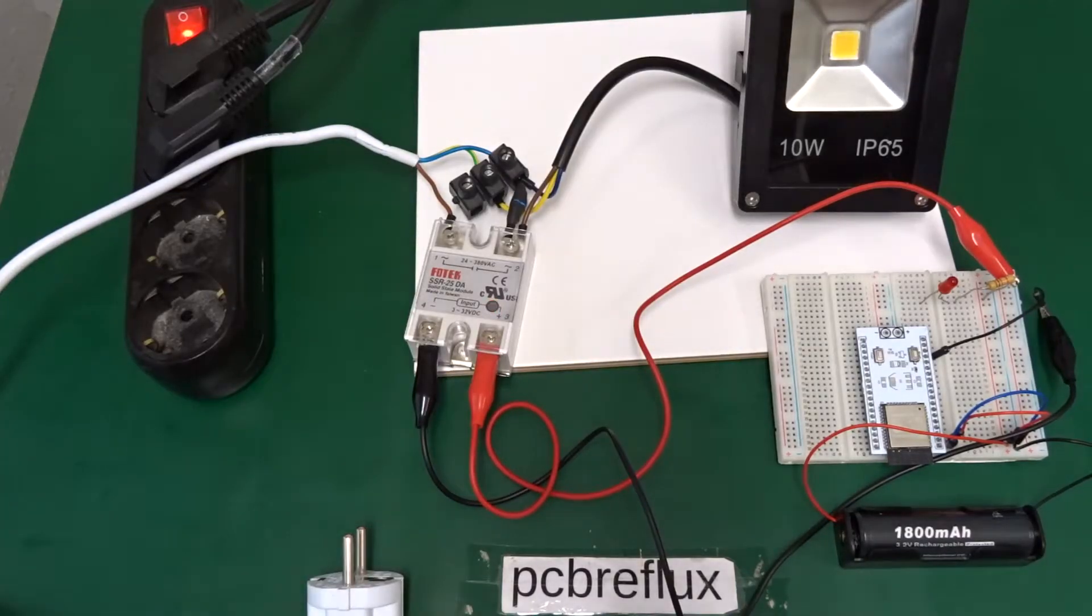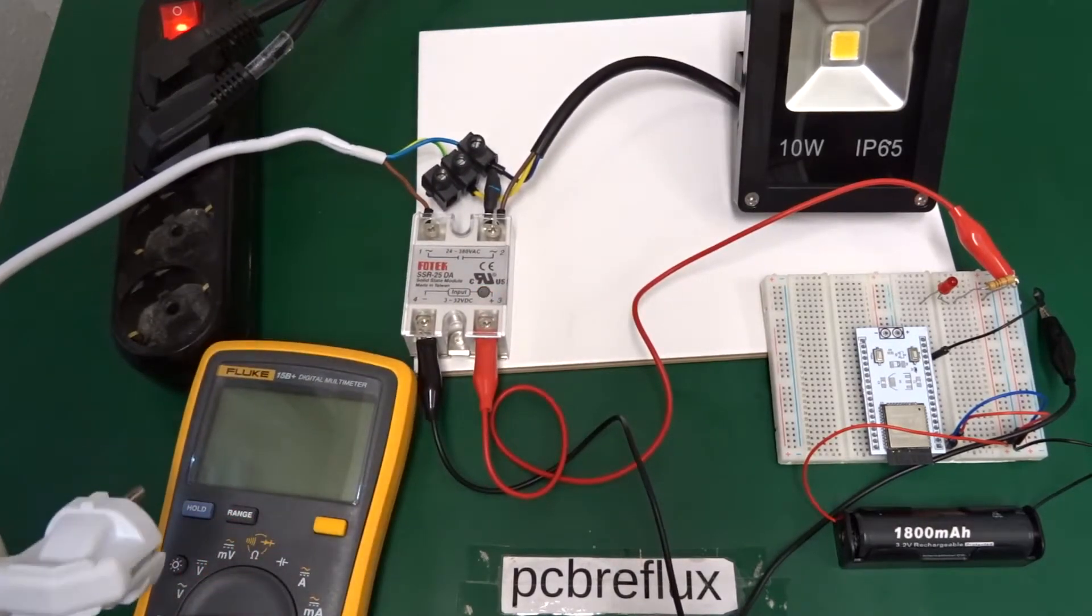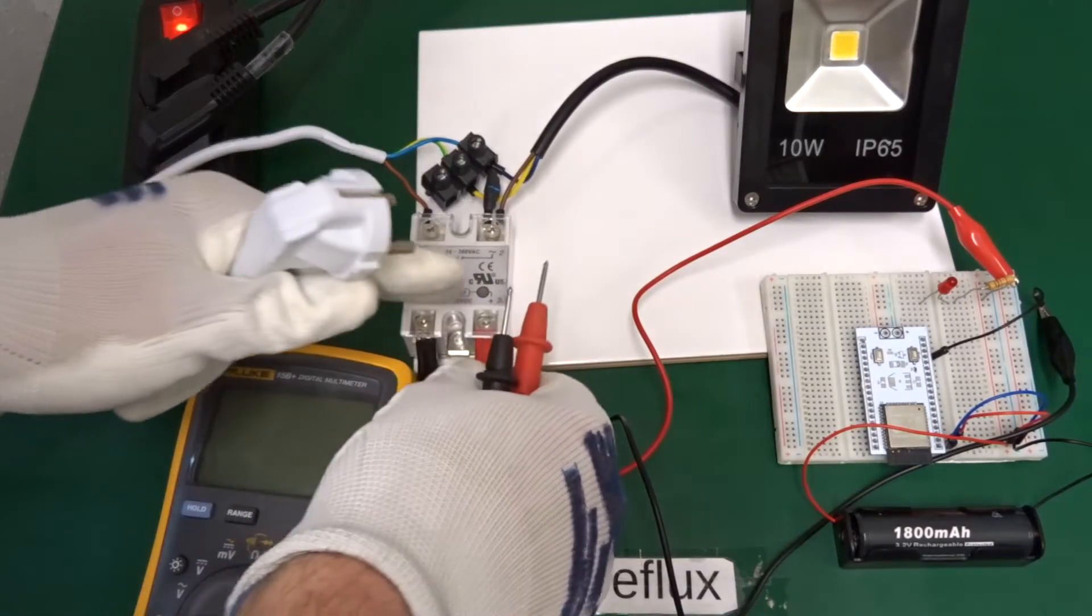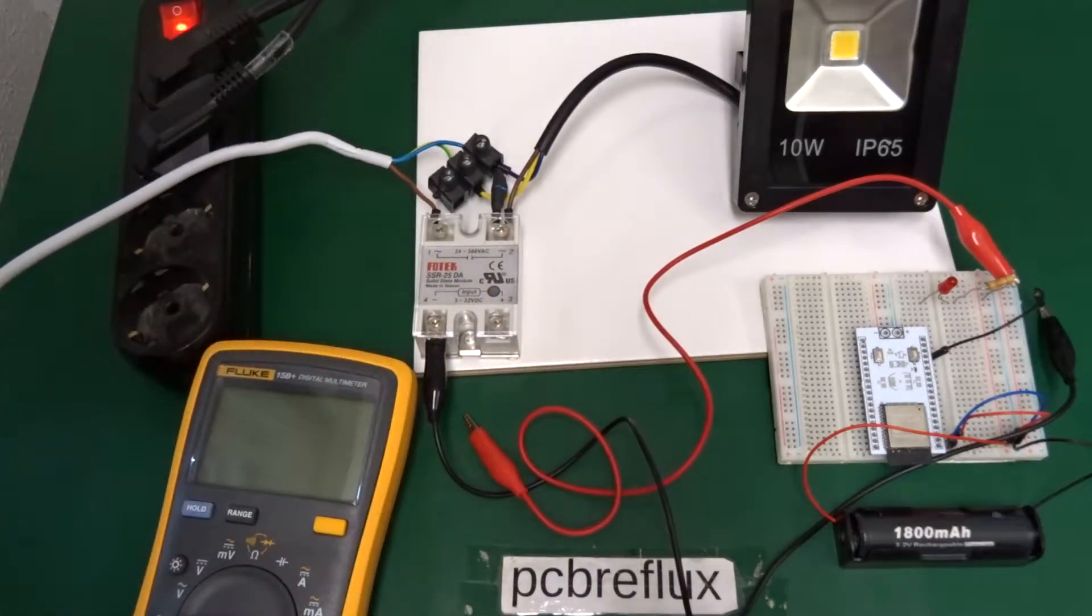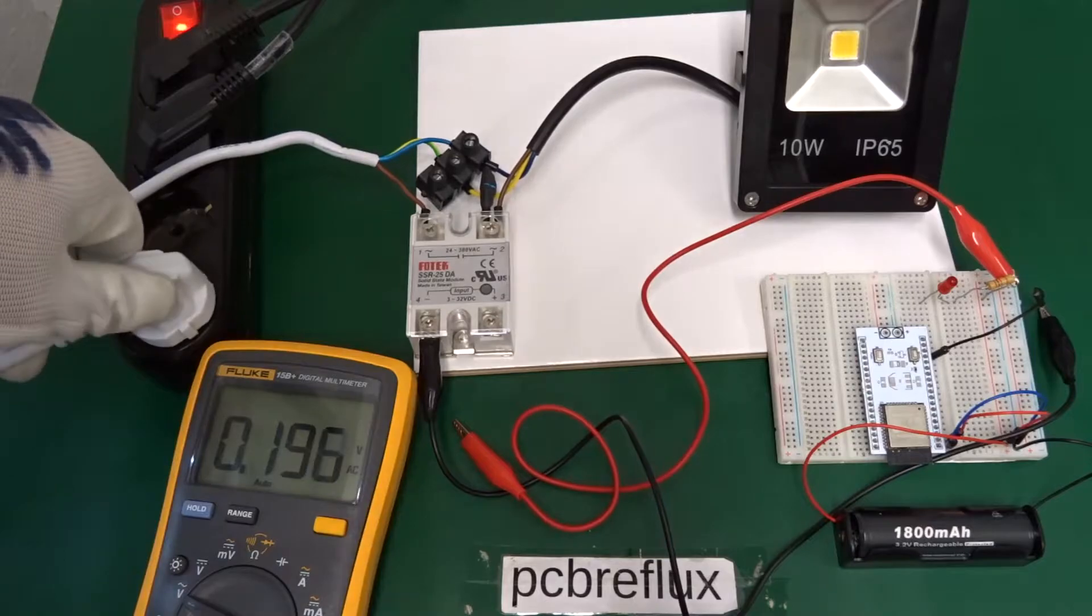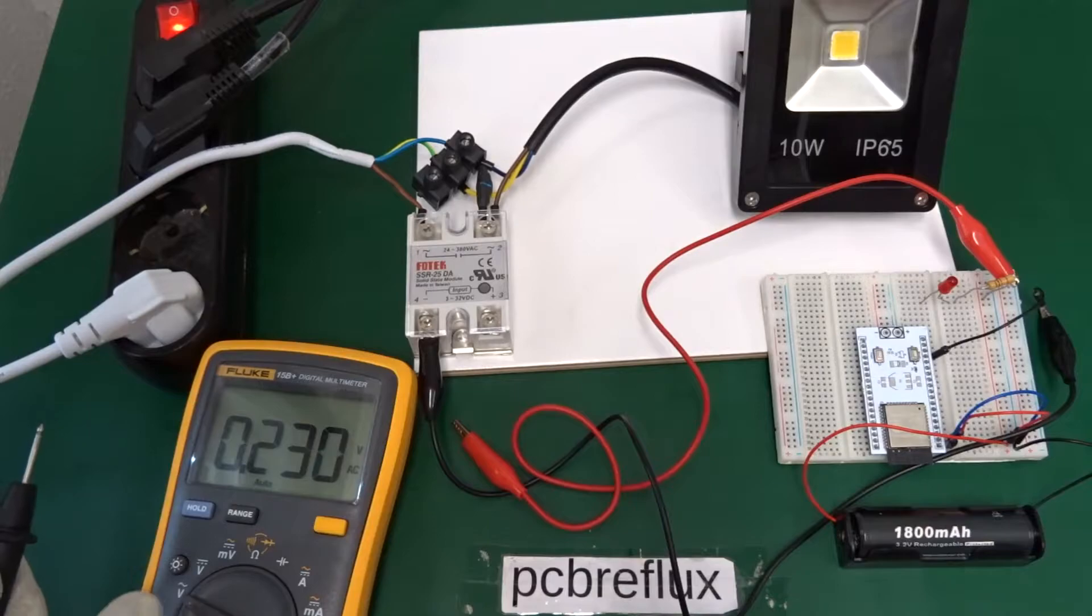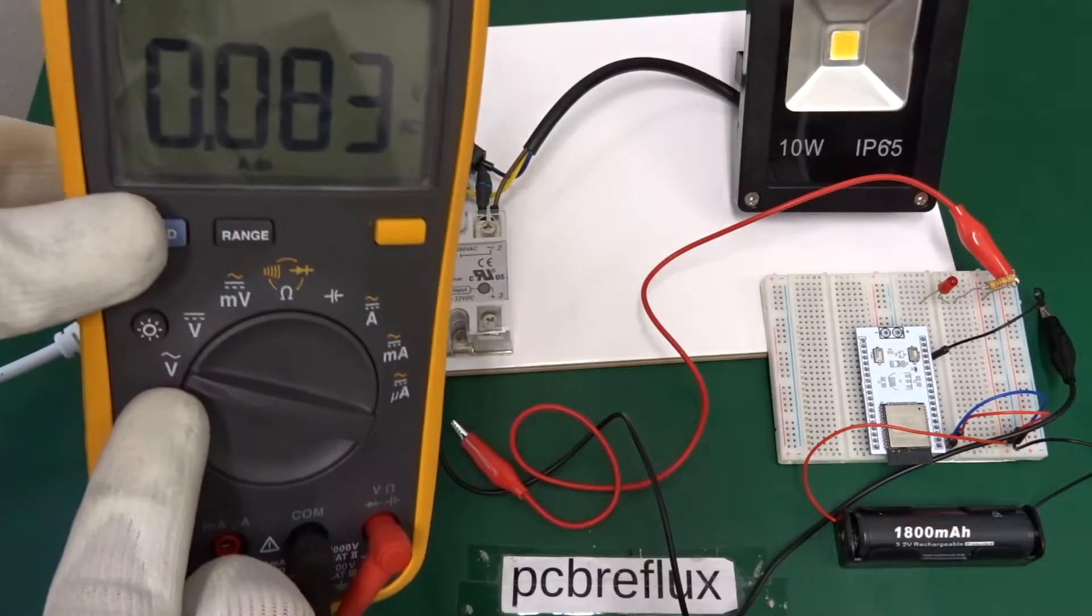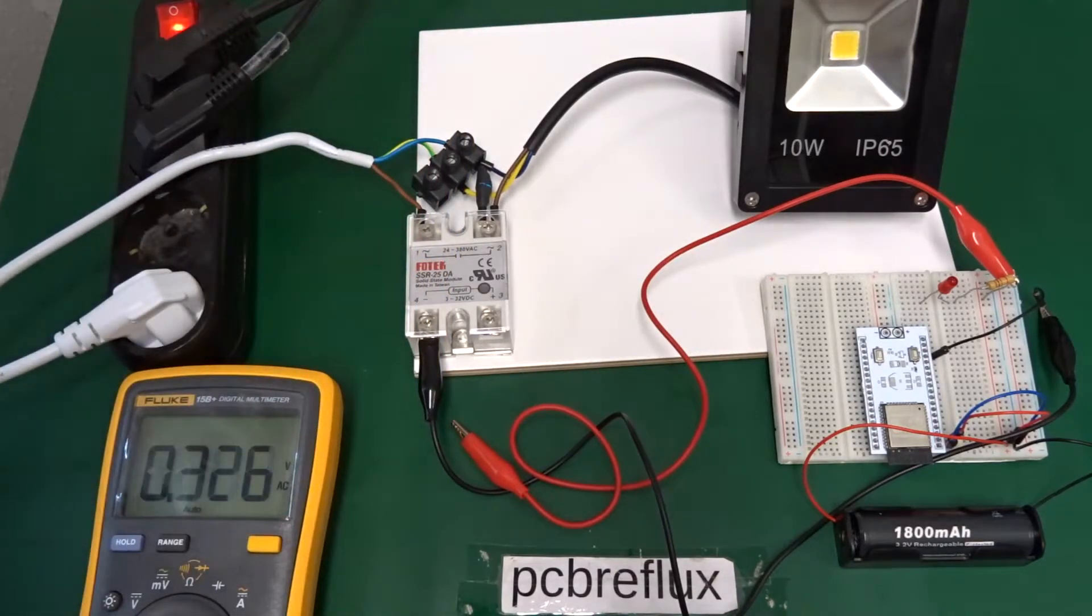Now before we plug in the mains voltage we first disconnect our ESP32. Just to measure that we are really getting mains voltage to our solid state relay. I switch my multimeter to the AC voltage and for your multimeter make sure that it's able to measure mains voltage. In my case we get no true RMS value but it's okay to indicate there is the mains voltage.